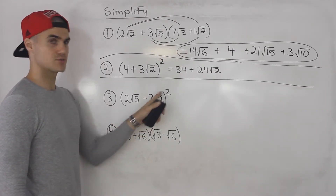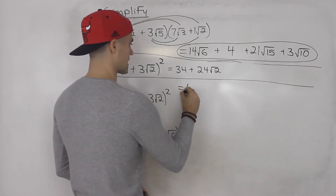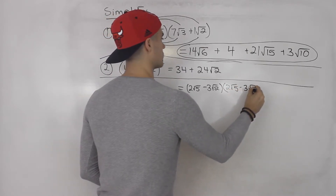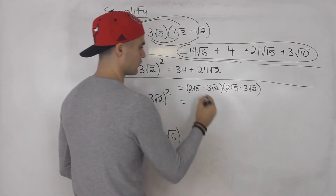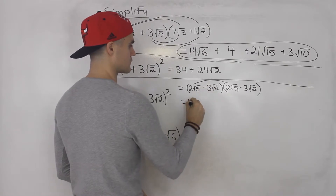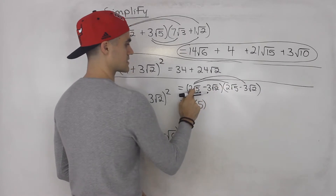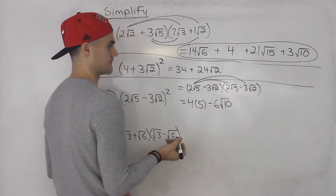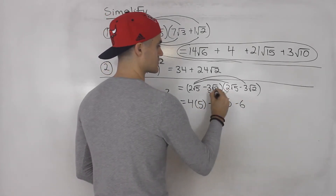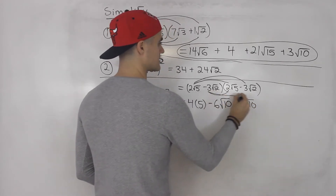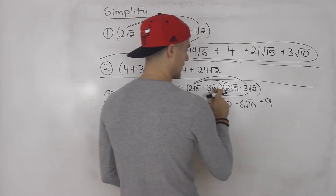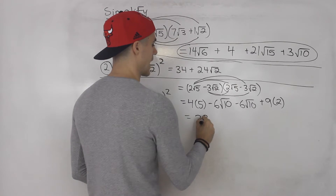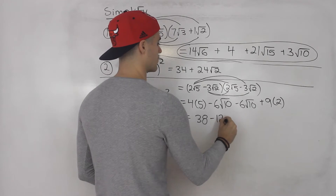Moving on to number 3: (2√5 - 3√2) squared. Just like number 2, we rewrite this as (2√5 - 3√2) times (2√5 - 3√2) and foil it out. 2√5 times 2√5: 2 times 2 is 4, and √5 times √5 is 5, giving 20. Then 2 times negative 3 gives negative 6, and √5 times √2 gives √10. Then negative 3 times 2 gives negative 6, and √2 times √5 gives √10. Finally, negative 3 times negative 3 gives positive 9, and √2 times √2 gives 2. So 20 + 18 = 38, and negative 6 minus 6 gives negative 12√10. The answer for number 3 is 38 - 12√10.